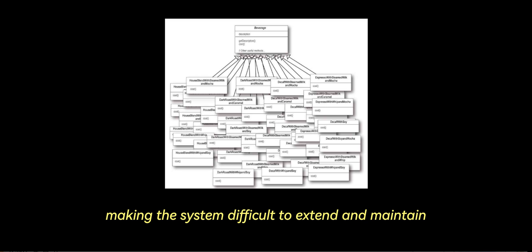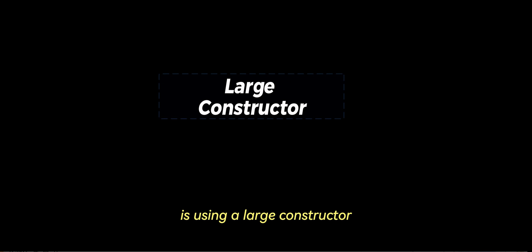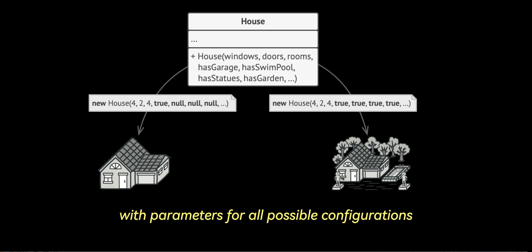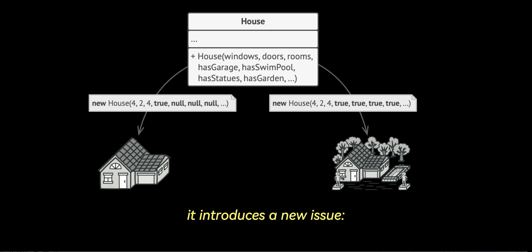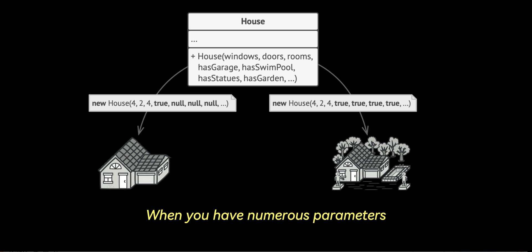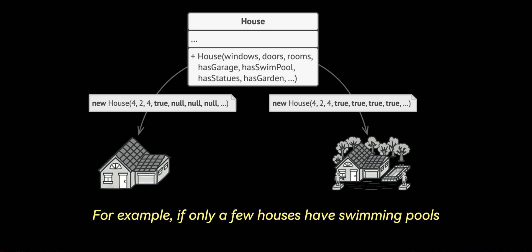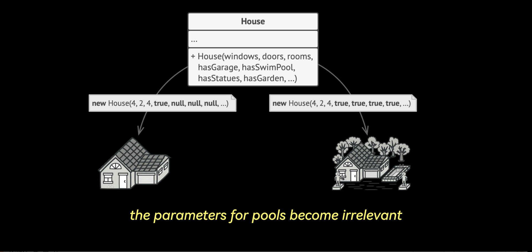Each new variation adds exponential complexity to the inheritance hierarchy, making the system difficult to extend and maintain. An alternative to subclassing is using a large constructor in the base house class with parameters for all possible configurations. While this does avoid breeding subclasses, it introduces a new issue: the telescoping constructor. When you have numerous parameters, most will often be unused, making constructor calls very messy and confusing. For example, if only a few houses have swimming pools, the parameters for pools become irrelevant and clutter the constructor in most cases.